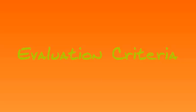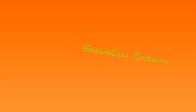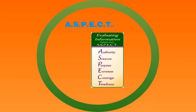So what criteria can we use? What do we actually look at to find out if this is going to be a good source to use or not? We're going to look at ASPECT — look at every aspect. What that stands for is Authority, Sources, Purpose, Evenness, Coverage, and Timeliness. We're going to look at each of these individually. When you look at a source and you're trying to decide should I use this or not, you want to look at the ASPECT.